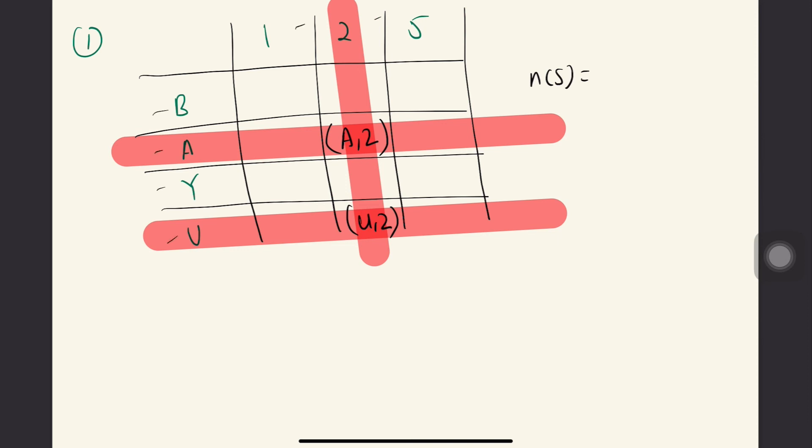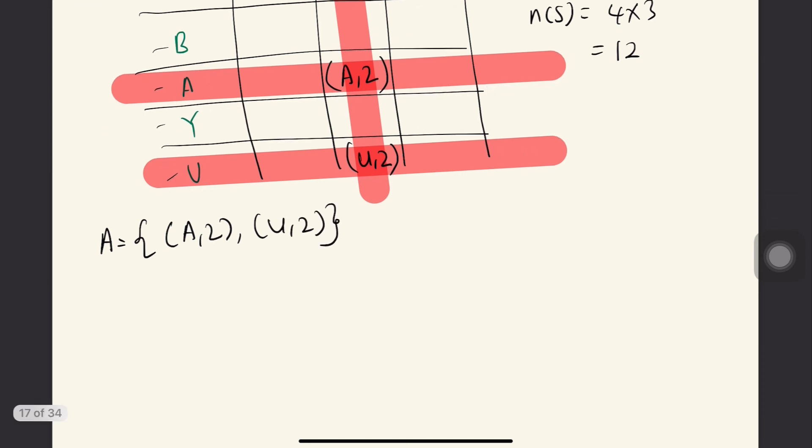And then we count the number of samples from this box. 1, 2, 3, 4. 1, 2, 3. So 4 times 3 is 12. So we list: the possible outcomes are A2, U2. Next, we write number of samples, we have 12.